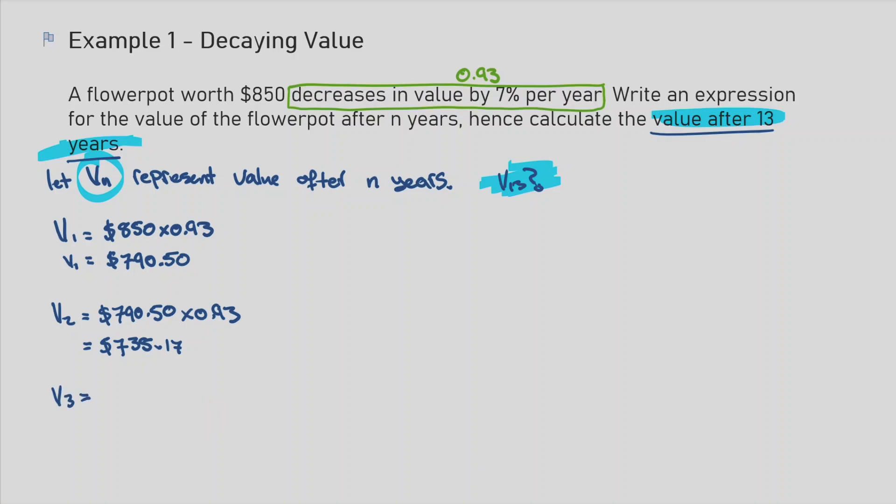V of 3, just so we can write this out clearly. This was V of 2, and that's what this was here. So instead of writing out 735.17 and finding 93% of that, I know that was really just this, and then I'm gonna find 93% of that.